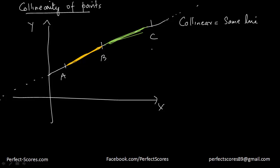Which means I can say that AB and BC are one in the same line, which means I can say that the slope of AB would actually be equal to the slope of BC.